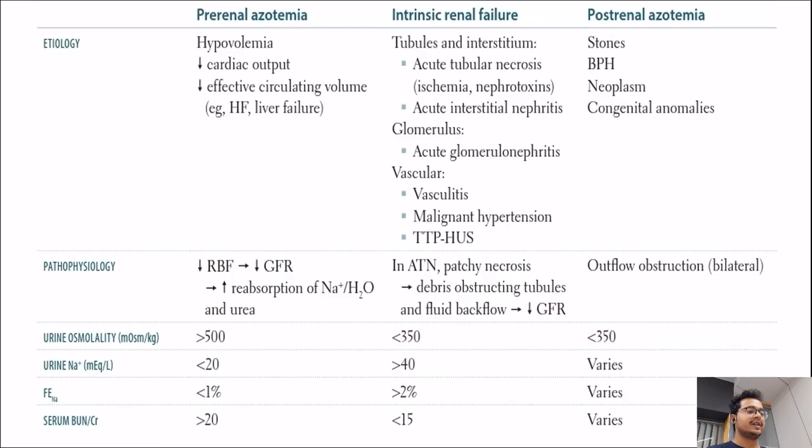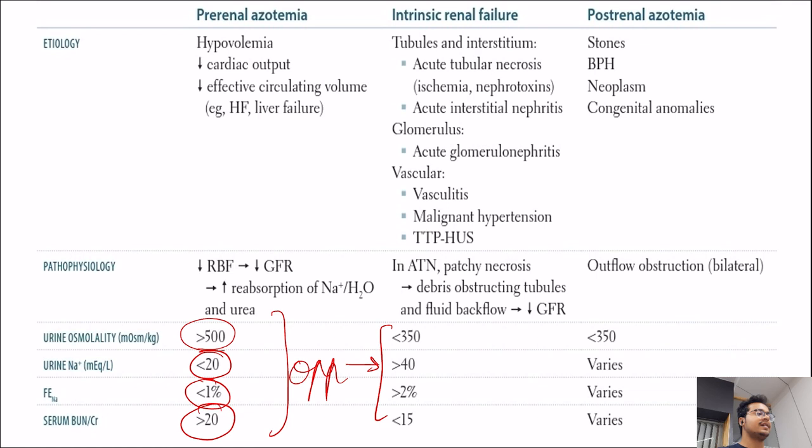Let us summarize this in one table. In pre-renal azotemia: urine osmolarity will be more than 500, urine sodium will be reduced to less than 20, fractional excretion of sodium will be less than 1%, and BUN to serum creatinine ratio will be more than or equal to 20. The exactly opposite occurs in renal failure. In post-renal azotemia there will be pain and oliguria.